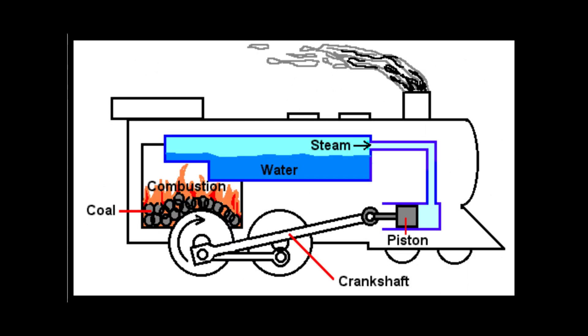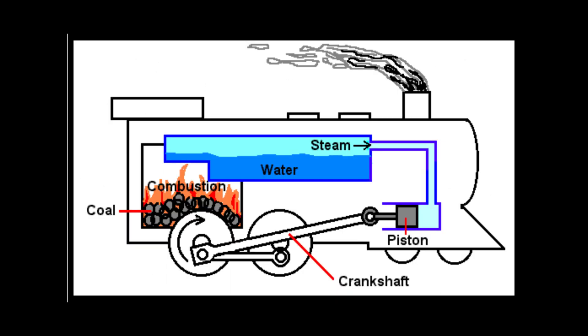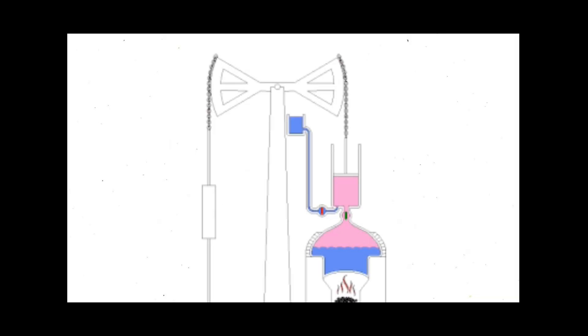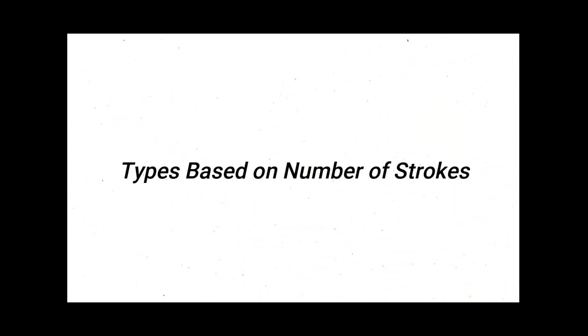Now let's understand what is external combustion engine. As the name suggests, in an external combustion engine, combustion of fuel takes place outside the engine. Here the extra heat is utilized to produce low pressure steam which is used in the turbine to produce electricity. Here the fuel is burnt outside the engine so we can also use solid fuel. External combustion engines are not used in cars.